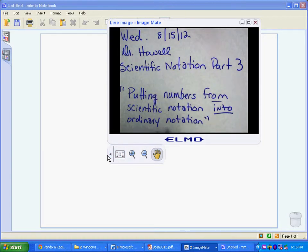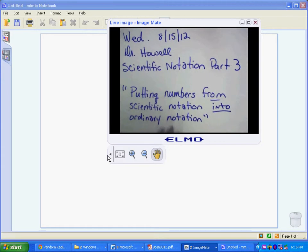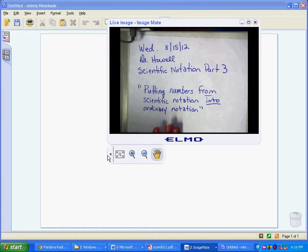Okay, in the last lesson we looked at putting numbers into scientific notation from ordinary notation. So we're going to do the opposite in this one. It's very easy. We're just going to go from scientific notation into ordinary notation.